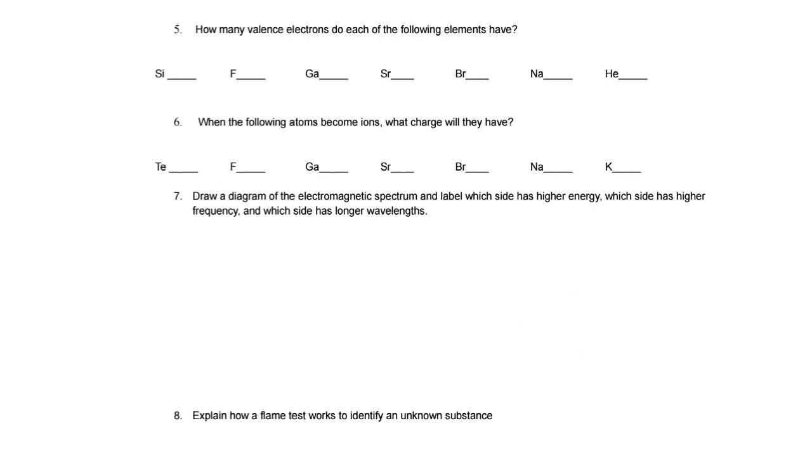On to valence electrons. So my big trick with valence electrons is that you look at the group number. If it's in groups one or two, that just is the number of valence electrons. Group one or two valence electrons is one or two. We're not going to worry about valence electrons in the transition metals. We'll pick up again, group 13, 13 through 18. It's also very easy. You just chop off the one. So group 13 would have three, 14 would have four, then five, six, seven, eight. So let's just do this by group numbers, starting with silicon. So it's in group 14. So it's going to have four valence electrons. Fluorine group 17, so seven. Gallium group 13, so three. Strontium two, bromine seven, sodium one, helium two. The max is eight. So I should never see a number over eight for valence electrons.